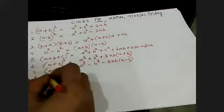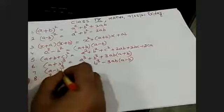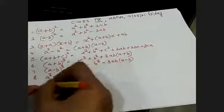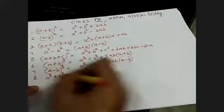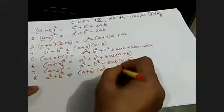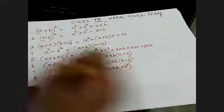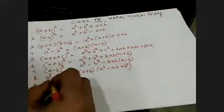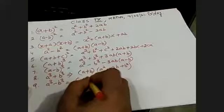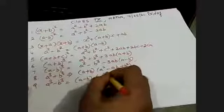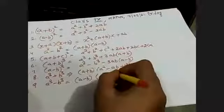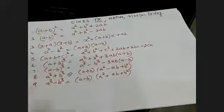And the next one is A cube plus B cube. When it is given like this, then it is equal to A plus B in the first bracket, and in the second bracket A square minus AB plus B square. And the next identity is A cube minus B cube, that is equal to A minus B and in the bracket A square plus AB plus B square.